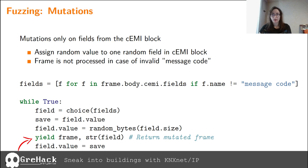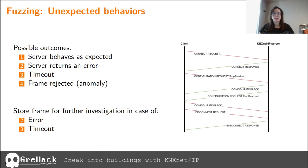Our mutation function starts from a valid frame, randomly chooses a field from the cEMI block except for the message code field, writes a random value to that field matching the field size, returns the mutated frame, switches back to the original frame, and repeats. Each frame is sent to our target, following a specific exchange sequence: we first connect, send a configuration request, wait for the acknowledgement and response, acknowledge back, and disconnect. Depending on how the server responds or not, we will know if something unusual happened.